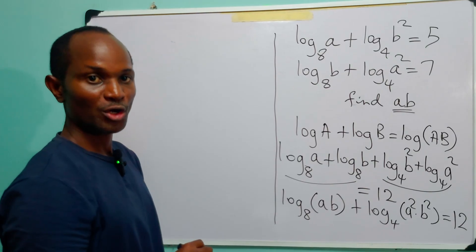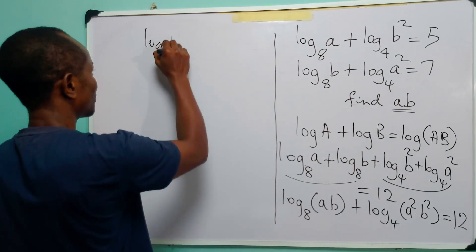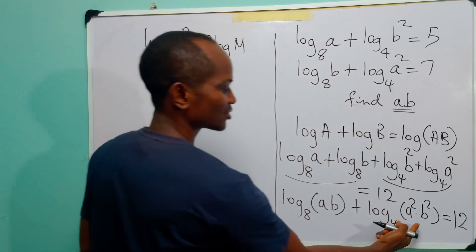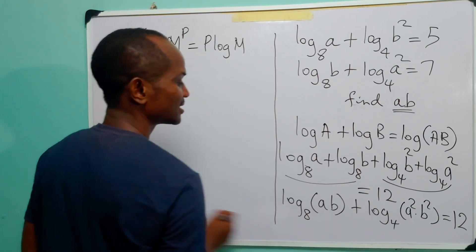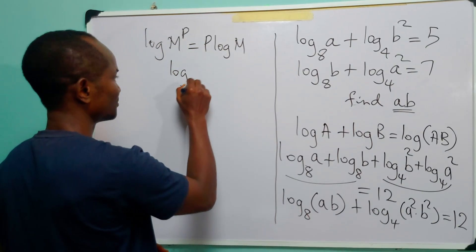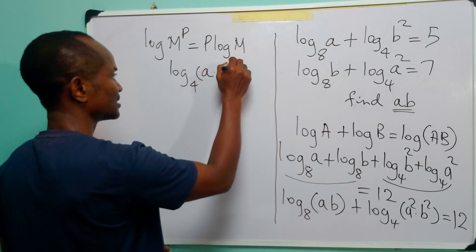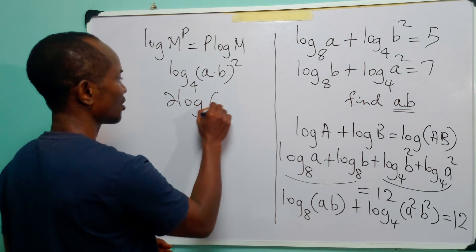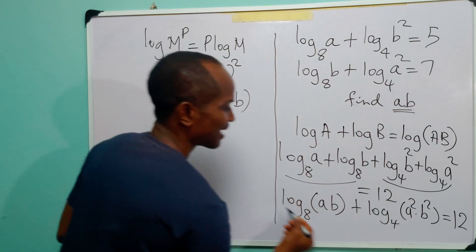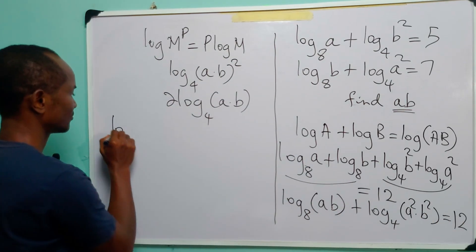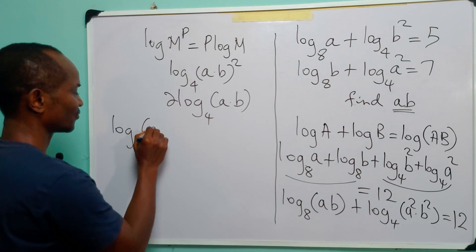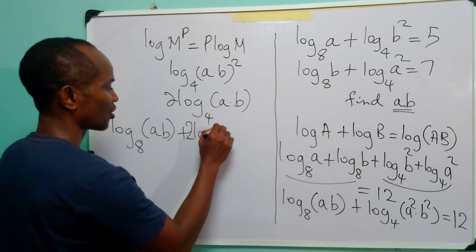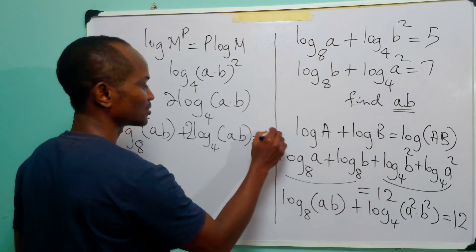Let us remember another law of logarithms: log of m raised to power p is equal to p multiplied by log m. Using this, log base 4 of (ab)² equals 2 times log base 4 of ab. So our equation becomes: log base 8 of ab plus 2 times log base 4 of ab is equal to 12.